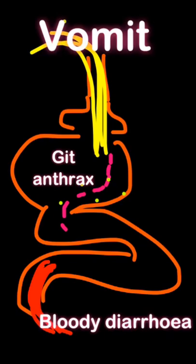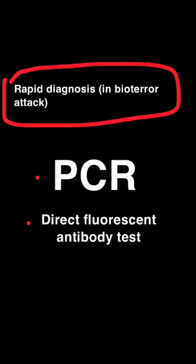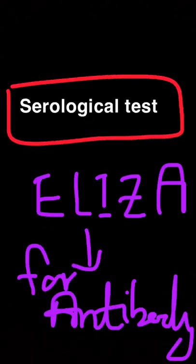The third route of entry is the gastrointestinal tract, usually from contaminated meat. The symptoms manifest as vomiting, abdominal pain, and bloody diarrhea. Findings of this organism: on Gram stain we can see a chain of rods that have square ends, and on blood agar we can see these organisms growing aerobically. For diagnosis, we use PCR and direct fluorescent antibody test. We can also use ELISA for antibody testing.